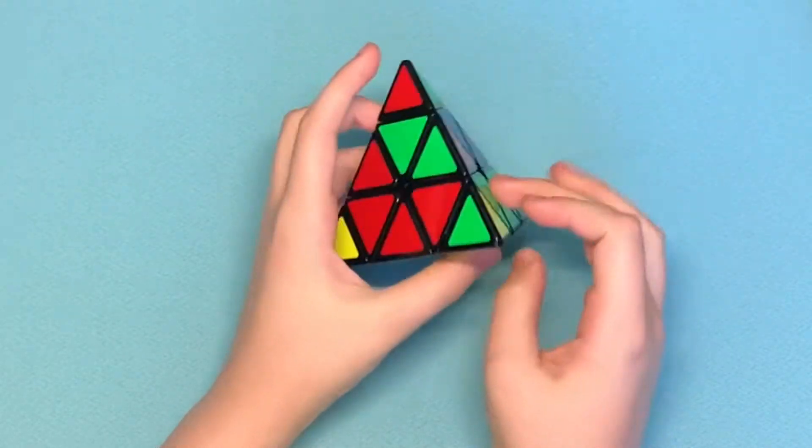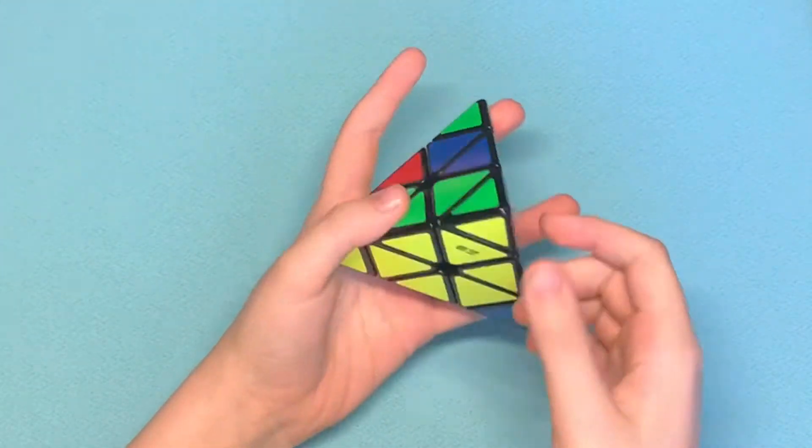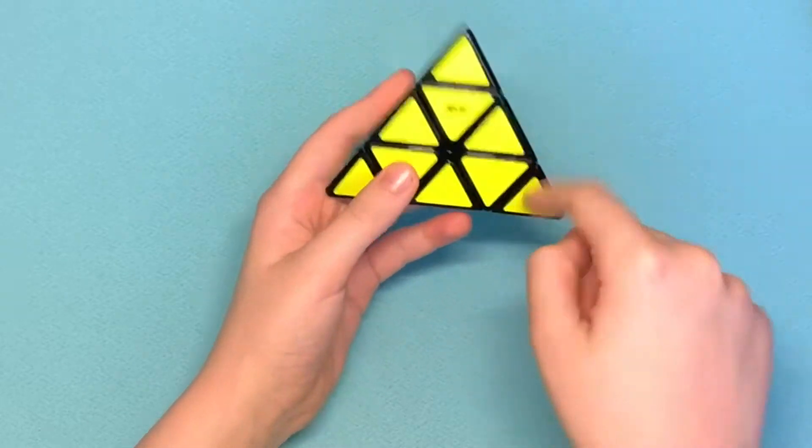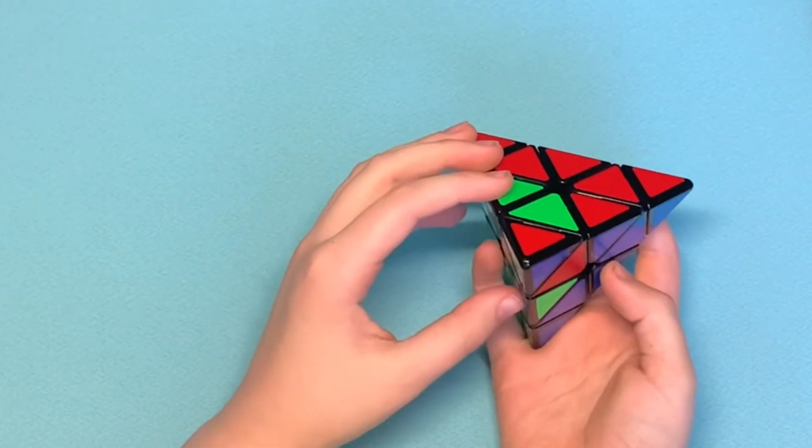Here, fun fact, the corners do not move at all. So if you were to scramble it not touching the corners at all, you probably wouldn't need to learn how to do them.